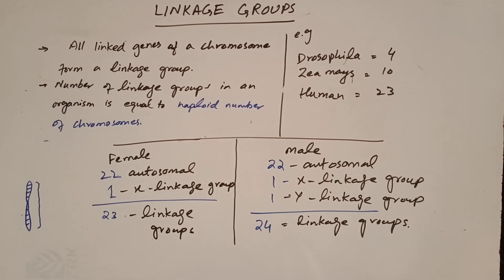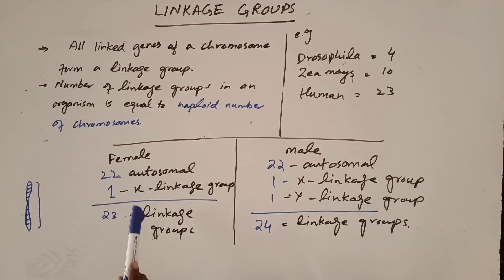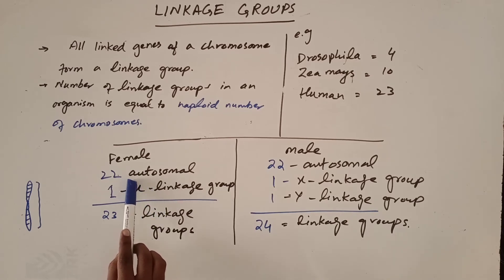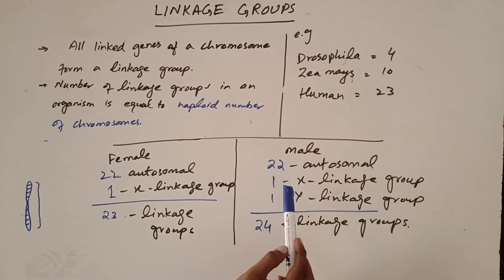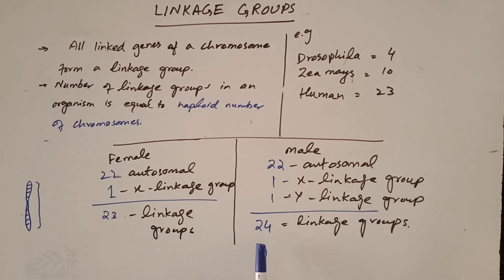However, there is a basic difference between male and female linkage groups. Females have 22 autosomal linkage groups and one X linkage group, giving 23 linkage groups total. Males have 22 autosomal linkage groups, one X linkage group, and one Y linkage group, giving 24 linkage groups — even though humans have only 23 pairs of chromosomes. This is the basic concept of linkage groups.